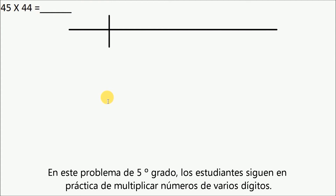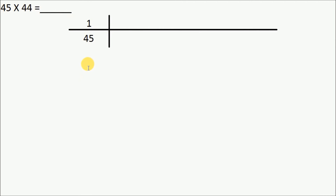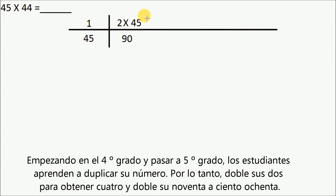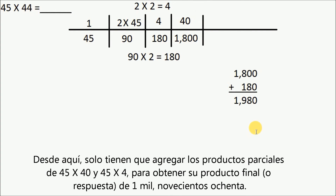In this fifth grade problem, students continue to practice multiplying multi-digit numbers. These numbers are quite bigger going from fourth grade to fifth grade, but ratio tables are still used in a similar but more advanced way. In this particular problem, students use a ratio table to find the product of 45 times 44. They multiply 2 times 45 to get 90. Starting in fourth grade and moving into fifth grade, students learn to double their numbers. So, they double their 2 to get 4, and double their 90 to get 180. They can then use their knowledge of the power of 10 to find that 45 times 40 is 1,800. From here, they just have to add the partial products of 45 times 40 and 45 times 4 to get their final product, or answer, of 1,980.